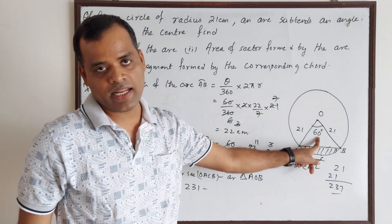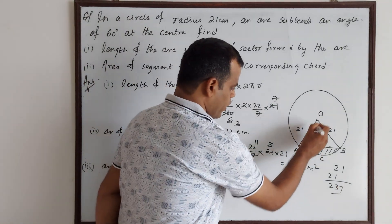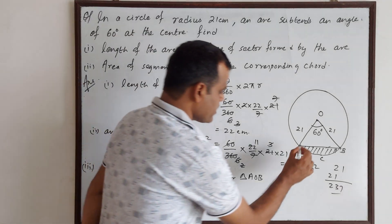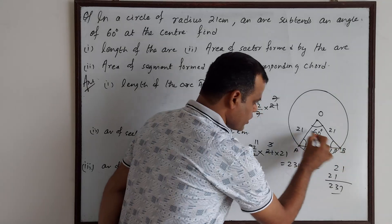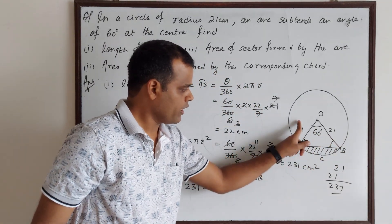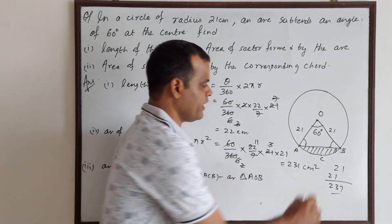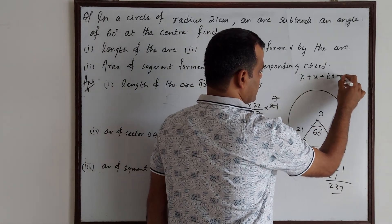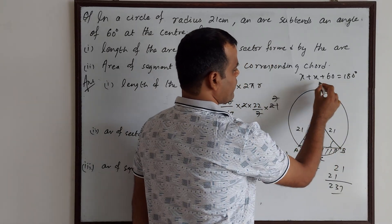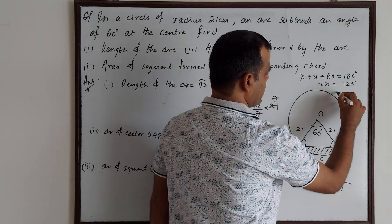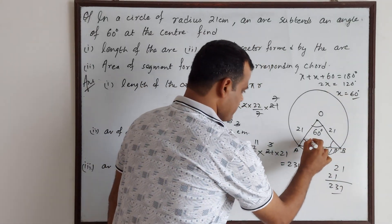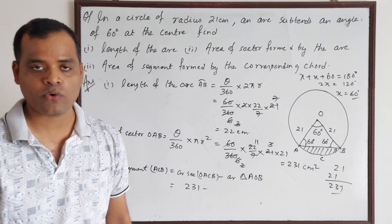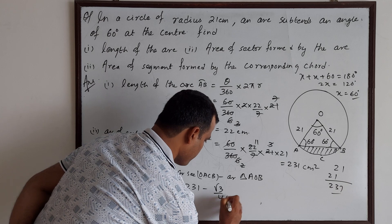The central angle is 60 degrees. OA and OB are radii of the circle, so they are equal. Because angles opposite to equal sides are equal, the base angles of triangle OAB are also equal. Let each base angle be X. Then X + X + 60 = 180 degrees, so 2X = 120, giving X = 60 degrees. All angles are 60 degrees, so triangle OAB is an equilateral triangle. The area of an equilateral triangle is (√3/4) × side².